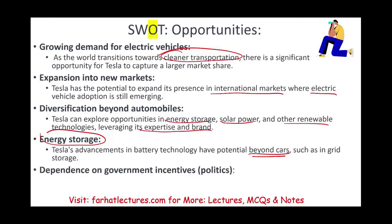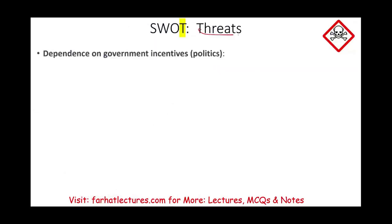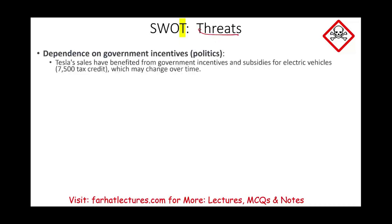Dependence on government incentives is both an opportunity and a threat. Tesla has benefited from government incentives and subsidies — for example, the government provides people who buy electric vehicles a tax credit of $7,500, which could change over time. This is an opportunity, but it can also be listed under threats because the government can change its policies.